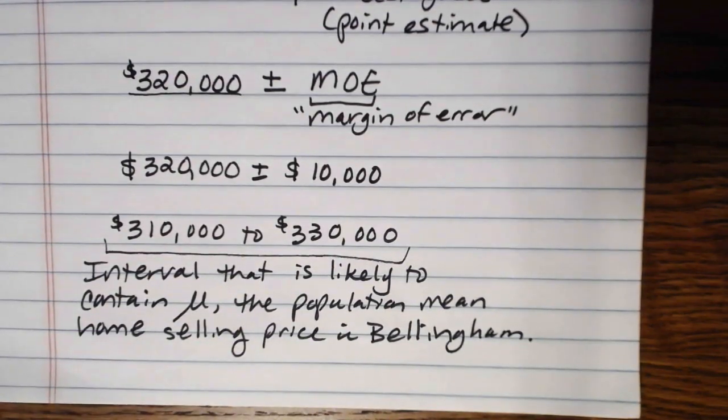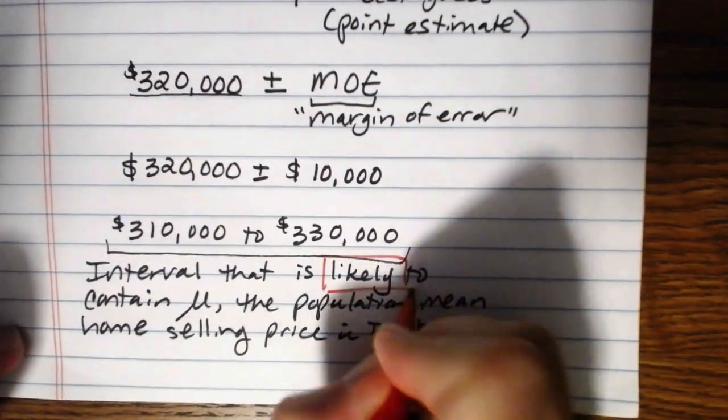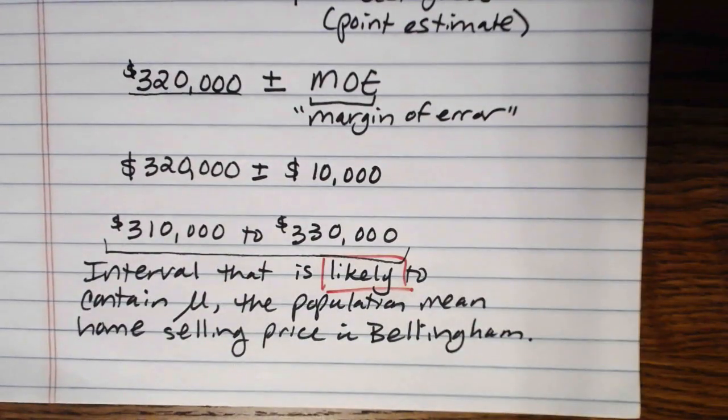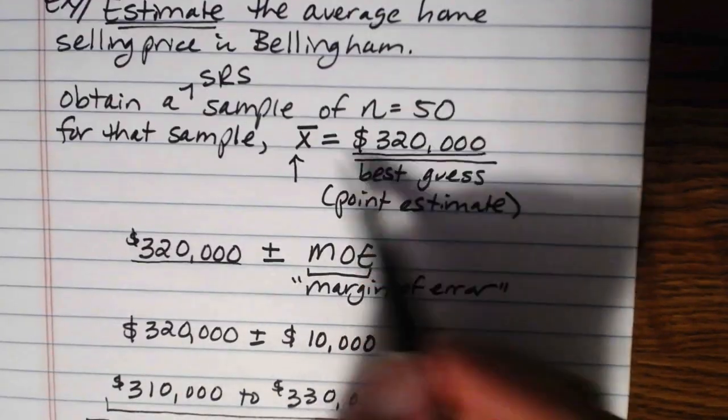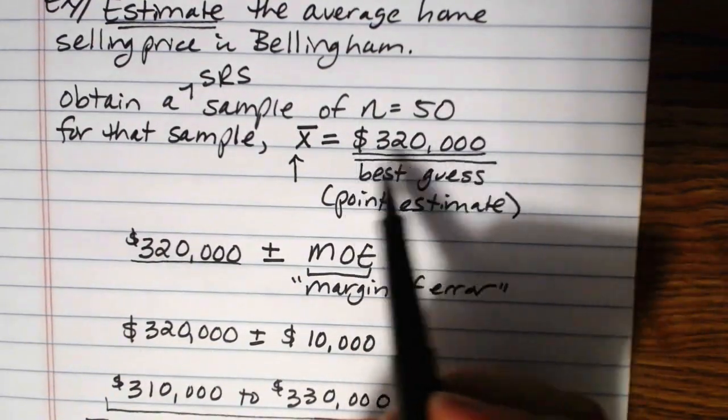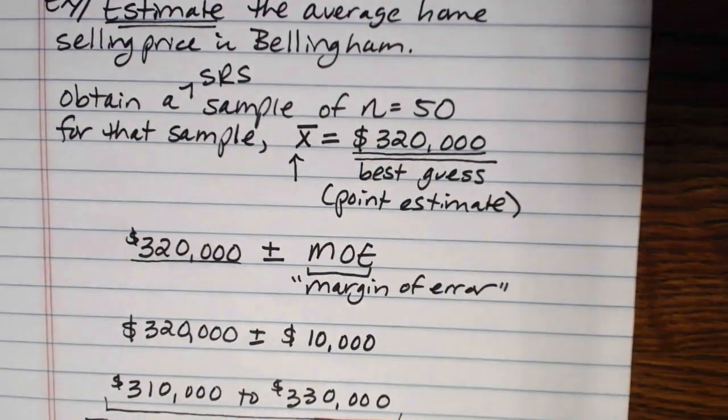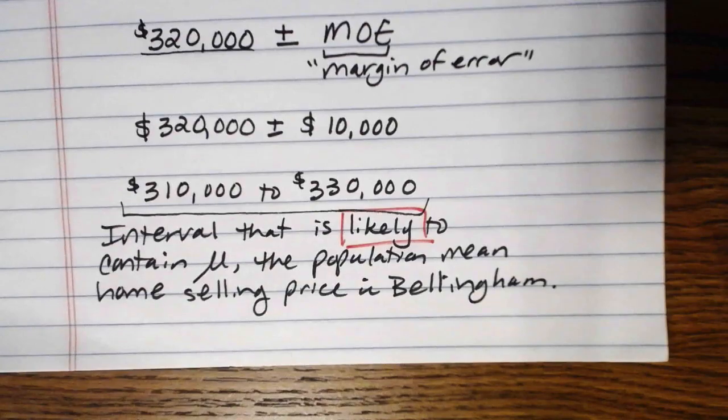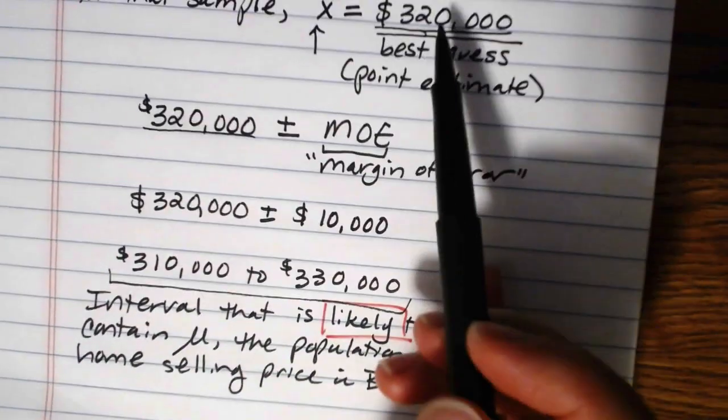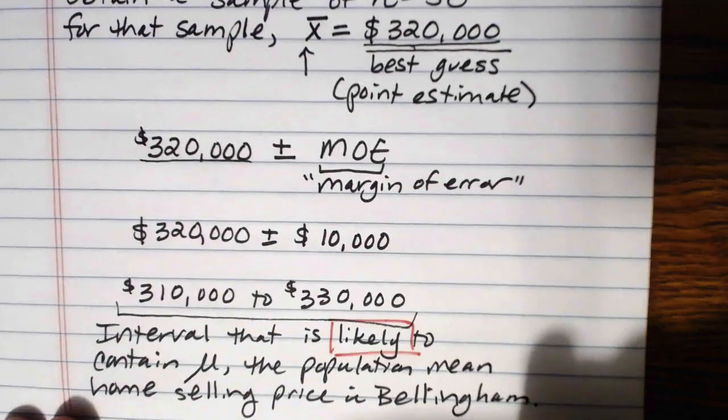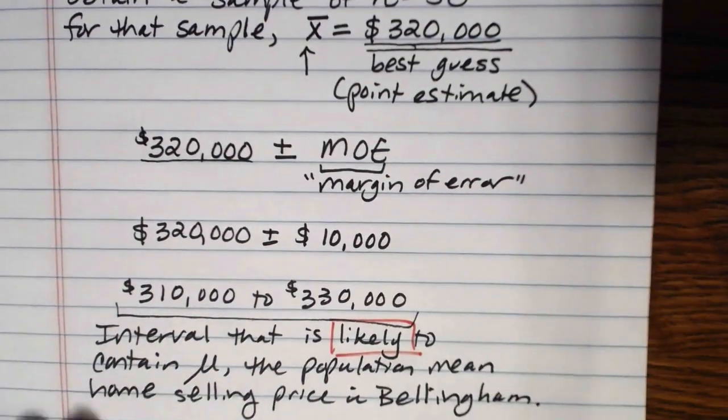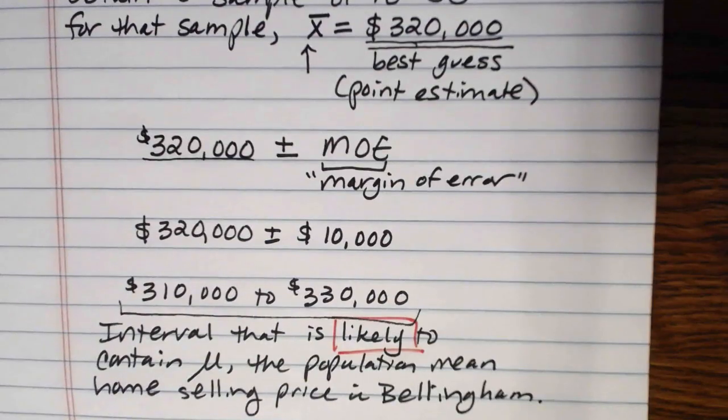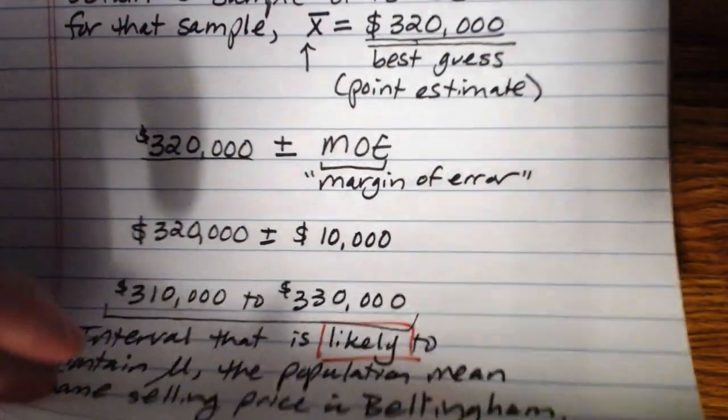Now, it does say likely. We are not guaranteed to have mu in this interval. It's just likely to be in there. And that's, again, because we've sampled. It's possible that this sample of 50 homes, maybe it wasn't a particularly representative sample, and maybe our best guess of $320,000 wasn't a particularly good guess to start with, making this interval not necessarily containing mu. So we try to get the best value that we can here. That increases our likelihood that the interval contains mu. There's one other thing that increases our likelihood that the interval contains mu. And that has to do with the percentage that we use for our confidence interval.